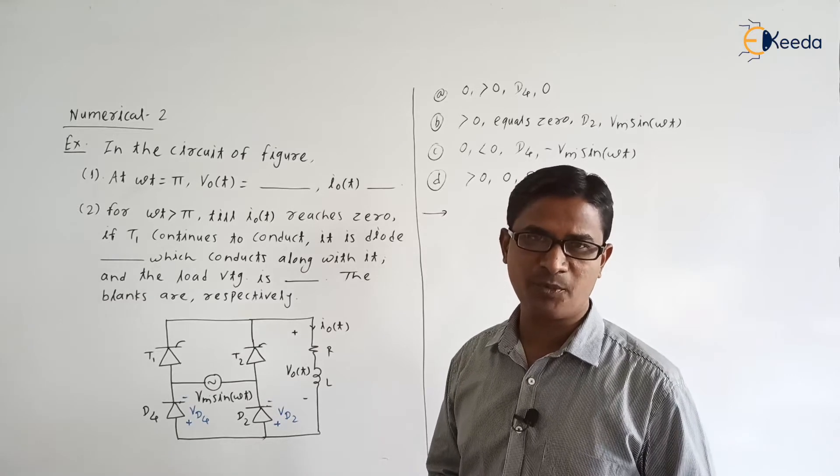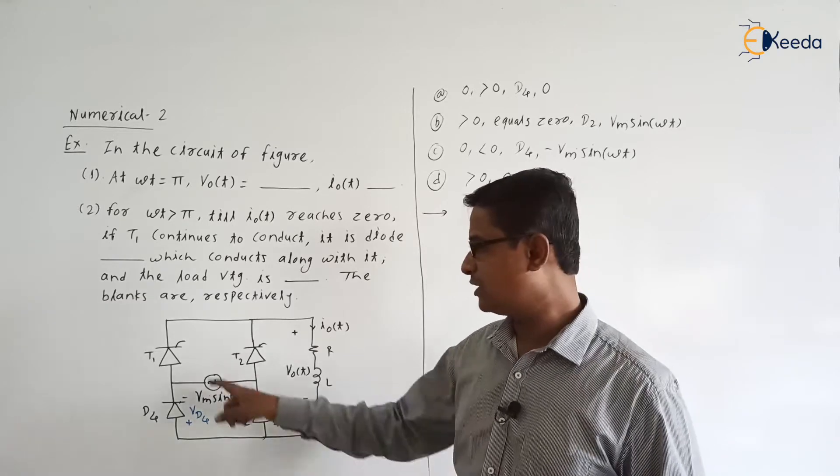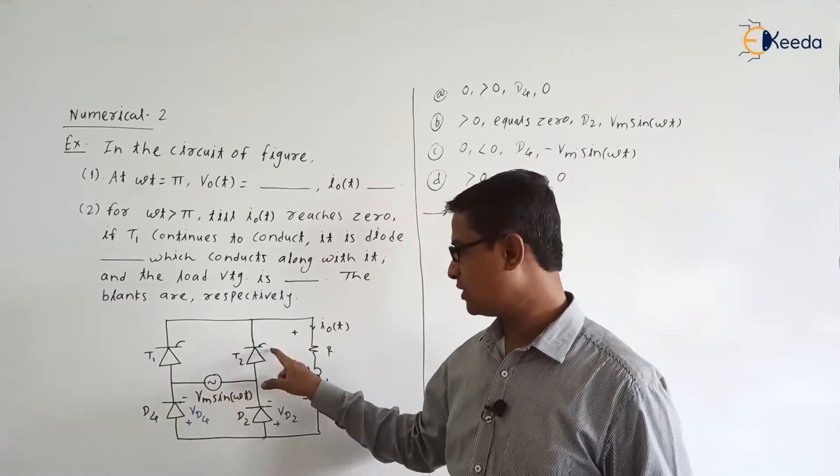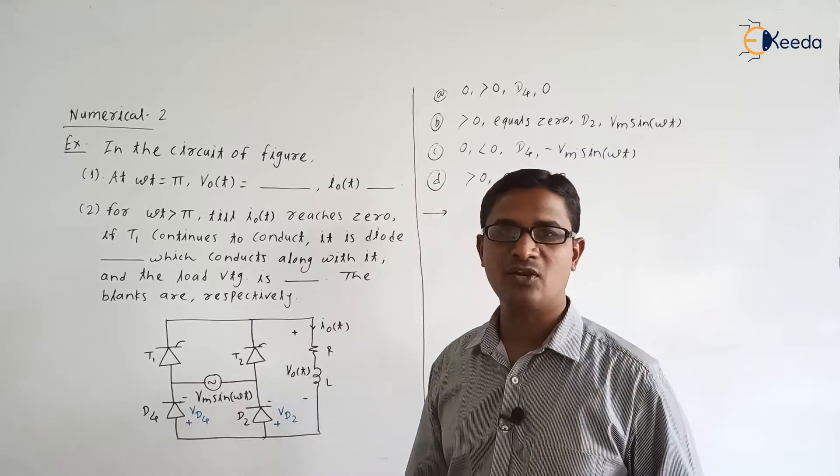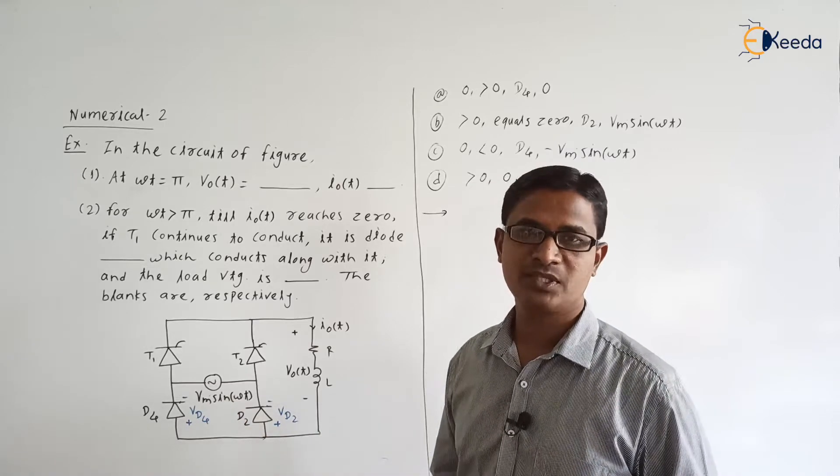One thyristor, one diode, one thyristor, one diode — that is the half-controlled bridge configuration. Vs is Vm into sin of omega t.